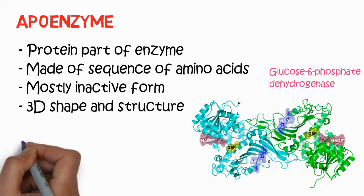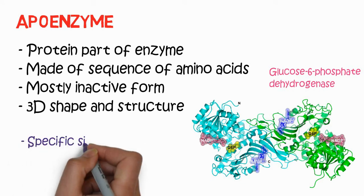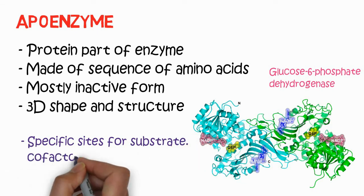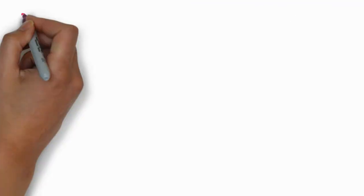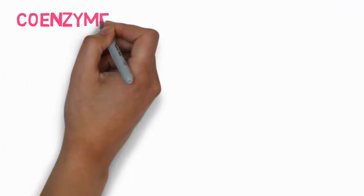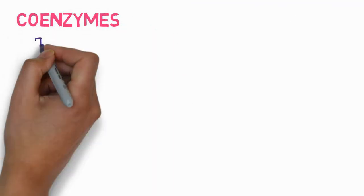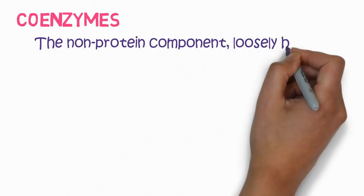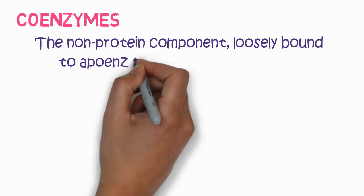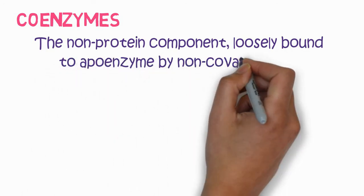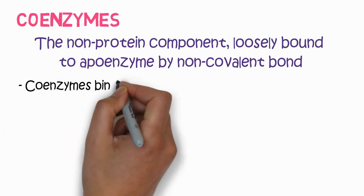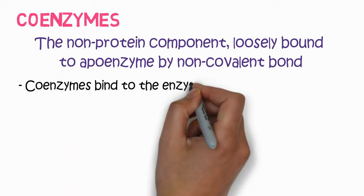This is known as glucose-6-phosphate dehydrogenase. It has a specific site for the attachment of NADP, which is a cofactor and coenzyme. Coenzymes are the non-protein component which are loosely bound to apoenzyme by non-covalent bonds.